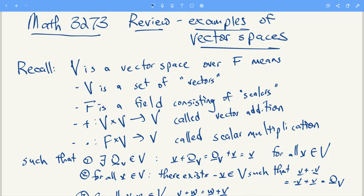So let me first remind you what a vector space is. It's the set of vectors, so the elements of V are called vectors. It has a field F. The elements of F are called scalars. There's a way to add two vectors to get another vector, and there's a way to multiply a vector by a scalar to get another vector.